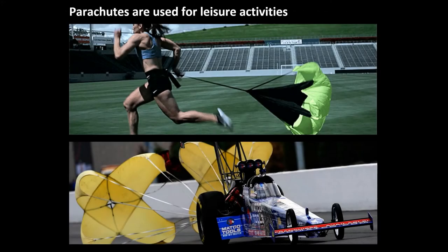Another application for parachutes is exercise. Many runners attach a parachute to their back in order to create air resistance and make it more challenging to run. This helps them become stronger and faster runners, especially when that parachute is removed for competitions. Another sport that uses parachutes is drag racing. In a drag race, the cars are moving so rapidly that they are not able to slow themselves down quickly, which is why they need a parachute. It is able to decrease the car's terminal velocity or maximum speed, allowing it to come to a stop.